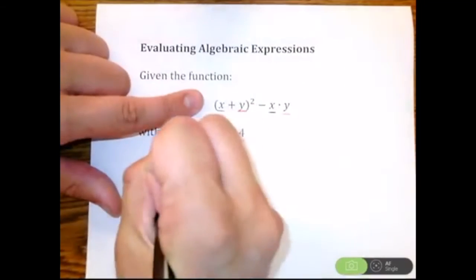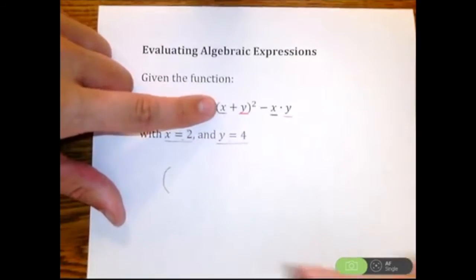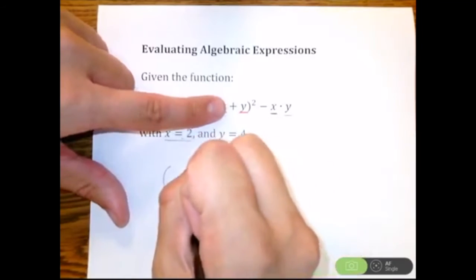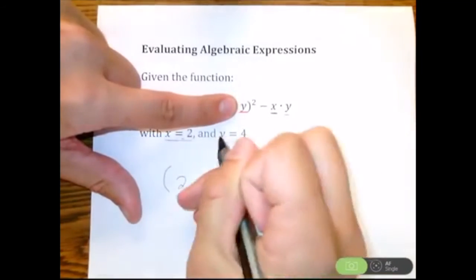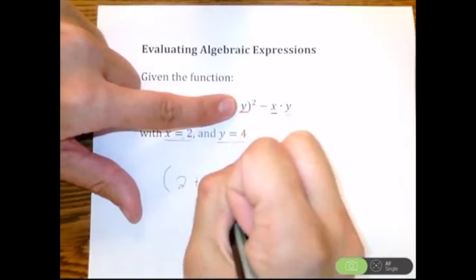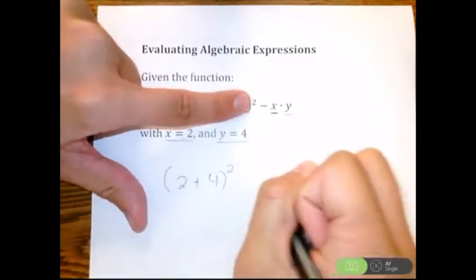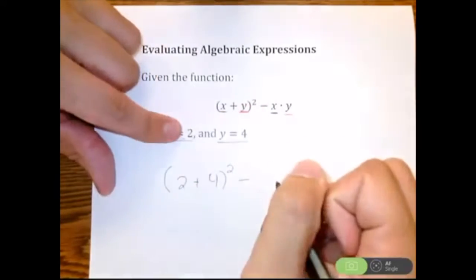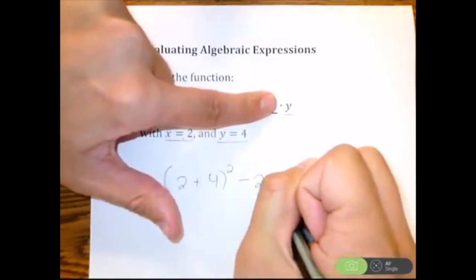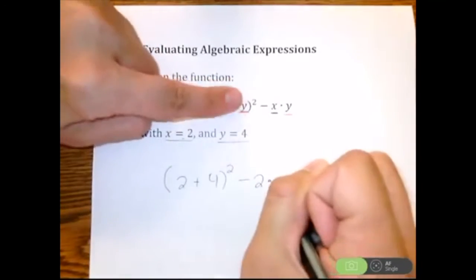So I'm going to have parentheses. Instead of x, let's put a 2. Plus y, well, y we said was 4, parentheses squared. Minus x, which we said was 2, multiplication, y we said was 4.